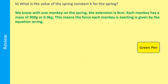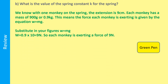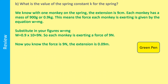Part B: what is the value of the spring constant k for the spring? We know that with one monkey on the spring the extension is 9 centimetres. Each monkey has a mass of 900 grams or 0.9 kilograms. Remember that's a mass, not a force. To find the force, you need to use the equation W = mg, because the force in this case is a weight caused by gravity.